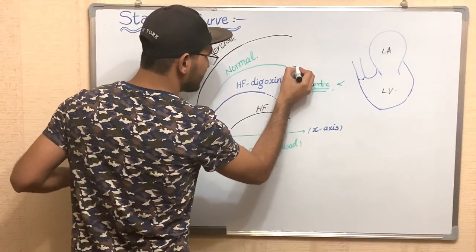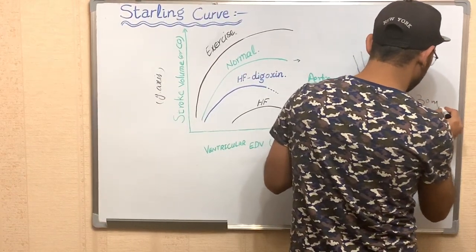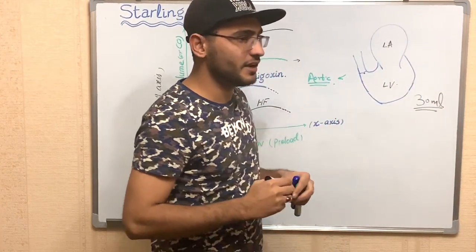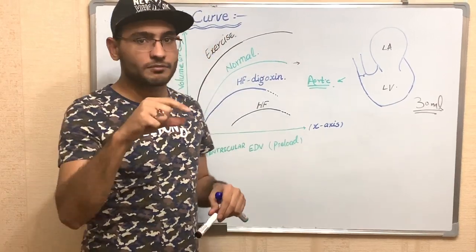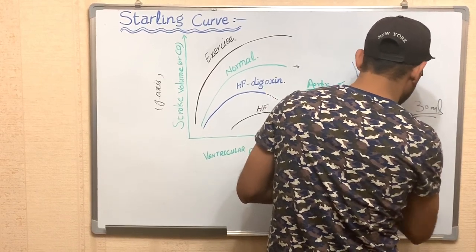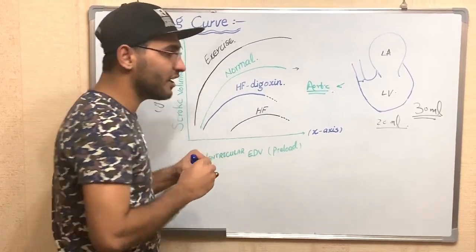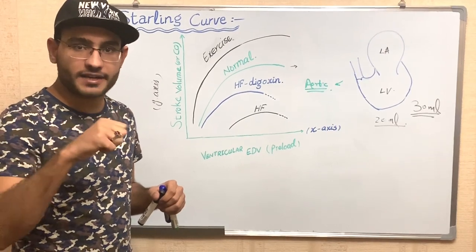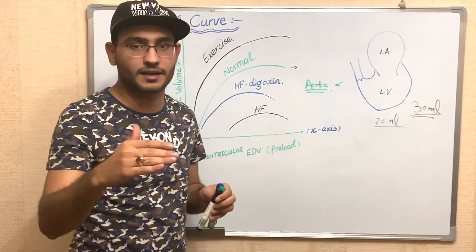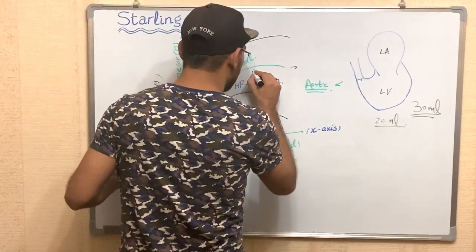For example, in the ventricle there is nearly 30 milliliters of blood present. Normally, when the ventricle contracts, nearly 20 milliliters of blood is pushed out from the ventricle. So when the ventricle contracts, 20 milliliters out of 30 milliliters is pumped out. This represents the normal line on the Starling curve graph.